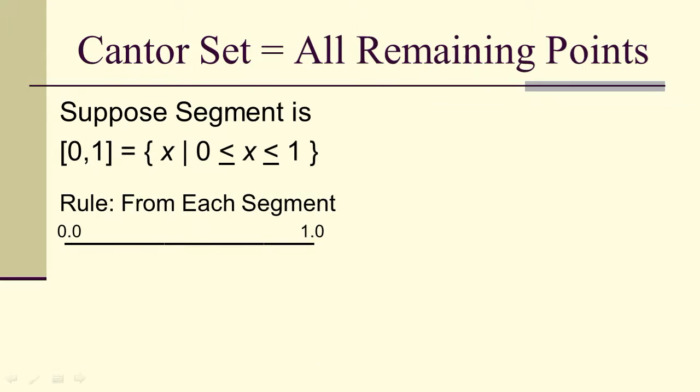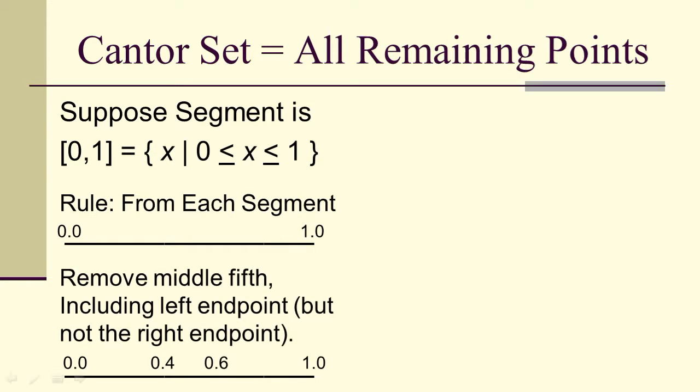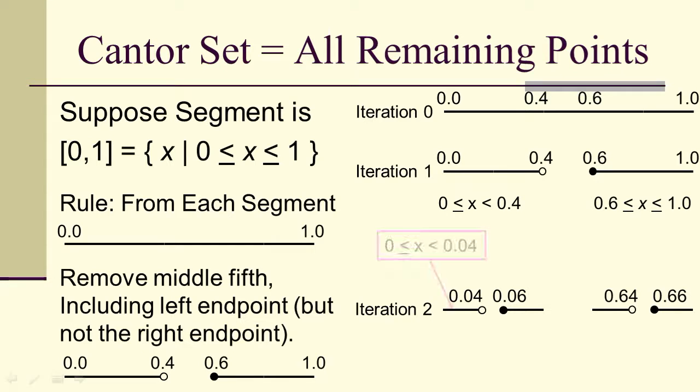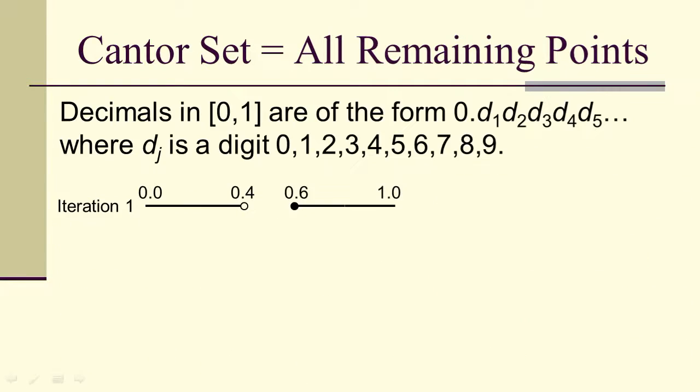In the limit, we actually get a set. We can actually say what set we get. Suppose that we started with the unit interval zero, one. Then, from each segment, we remove the middle fifth. That means everything between 0.4 and 0.6 in the first iteration. Then, from those two pieces, everything between 0.04 and 0.06 and everything between 0.64 and 0.66 is removed. Essentially, we can't have a 4 or a 5 in the first digit. Now we can't have a 4 or a 5 in the second digit. In the limit, we get decimals in the Cantor set that are of the form 0.d1 d2 d3 d4 d5, where dj is a digit 0, 1, 2, 3, 4, 5, 6, 7, 8, 9.